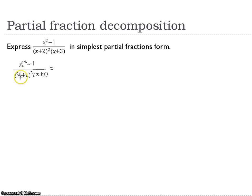As you can see here, x plus 2 squared is actually repeated linear factors. So we can express as A divided by x plus 2 plus B divided by x plus 2 squared. We will repeat until it reaches the power of 2.